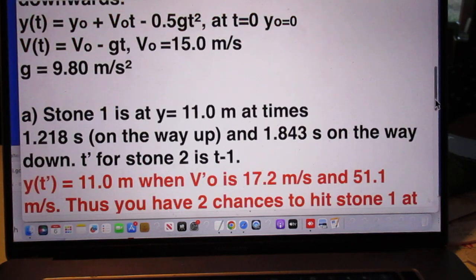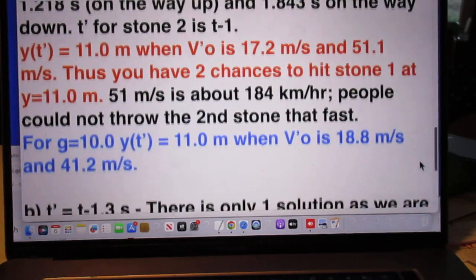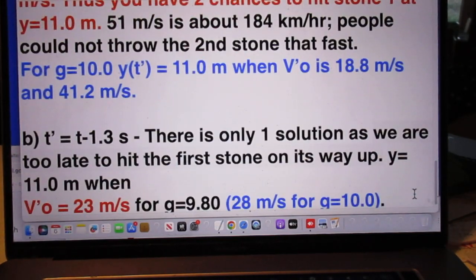If you use 10 for the gravitational acceleration, then v prime zero is 18.8 meters per second and 41.2 meters per second. Again, you get two options.